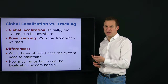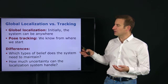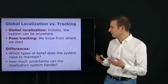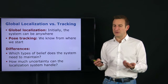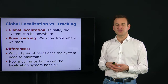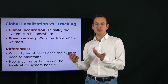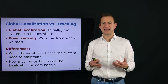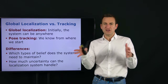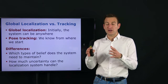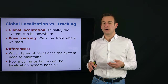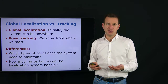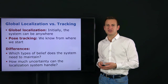Key questions to answer when designing a localization system include: which techniques should we use for global localization or pose tracking, what type of belief do we need to maintain, is a Gaussian belief sufficient or do we need to account for multi-modalities, and how much uncertainty can the localization system handle? This will impact which kind of localization system you choose or how you set it up.